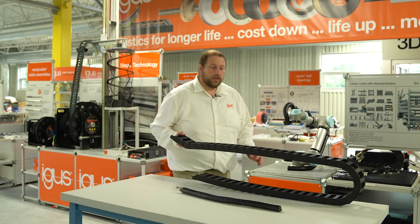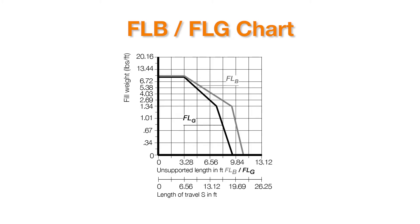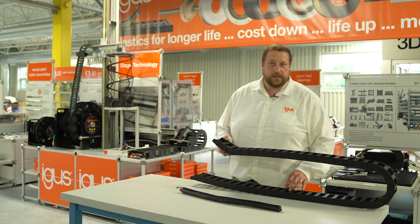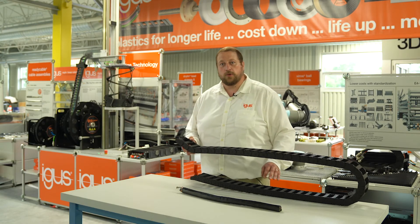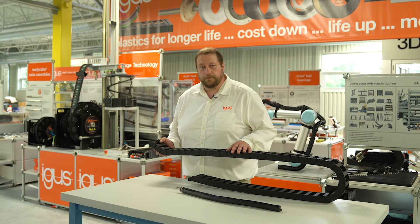As we look at every single energy chain series, we have what we call an FLG and FLB chart. We would like to maintain our chains near the FLG chart, because through experience and our testing facility, the chains will last millions of cycles if they are maintained around that FLG line. We'd like to avoid sag because it also will affect the speeds and acceleration that an application can run at.